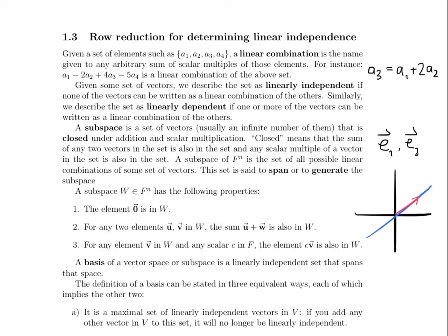As a result of the definition, a subspace has the following properties. First, the zero vector is always in the subspace, because we're saying all scalar multiples are included — and of course there's the zero scalar multiple, which returns the zero vector. Second, for any two elements in the subspace, their sum is also in the subspace. Third, for any element in the subspace and any scalar in the field F, the scalar multiple is also in the subspace. The zero vector property is the special case where the scalar is zero.